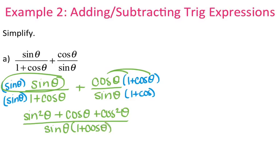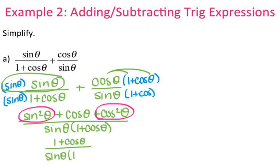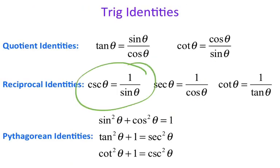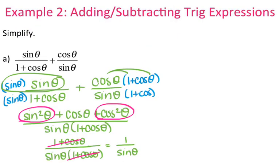The denominator I won't distribute yet, because we might be able to cancel something. Looking at the numerator, we have sine squared plus cosine squared, which by the Pythagorean identity equals 1. So the numerator becomes 1 plus cosine of theta, over sine of theta times 1 plus cosine of theta. The 1 plus cosine of theta cancels, leaving 1 over sine of theta. Since 1 over sine of theta equals cosecant, the answer is cosecant of theta.